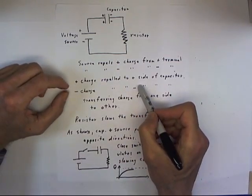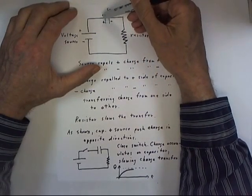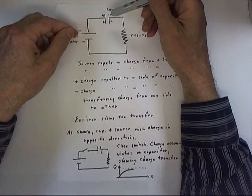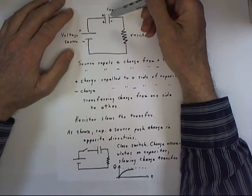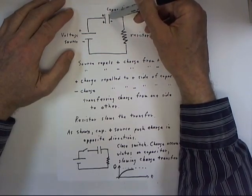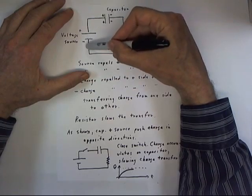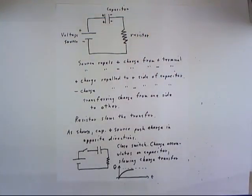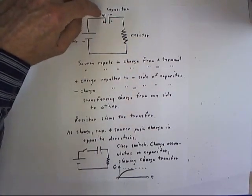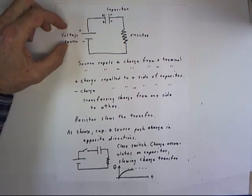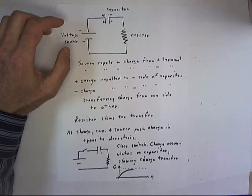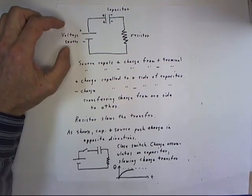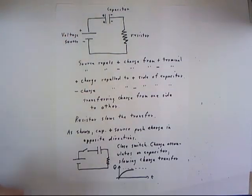The capacitor, having built positive charge on this side, is going to tend to repel positive charge in this direction, which is opposite to the tendency of the voltage source to push positive charge in this direction. Similarly, the negative charge on this side of the capacitor would tend to repel negative charges, which is opposite to the tendency of this side of the source to repel negative charges. So as the capacitor builds charge, it tends to fight the effect of the voltage source, meaning charge will continue to be transferred but at a slower and slower rate. This gives rise to an exponential approach to some limiting charge on the capacitor.